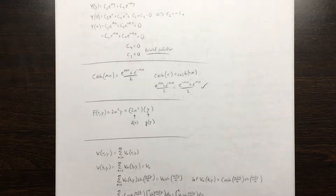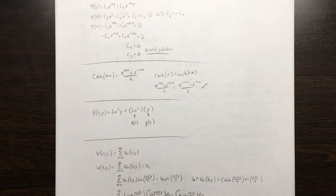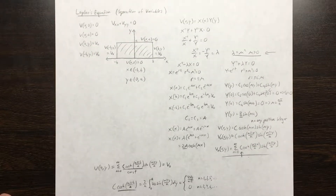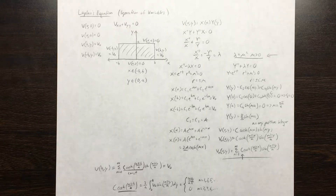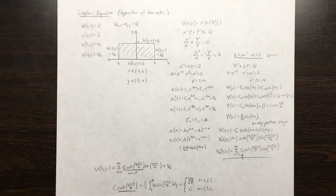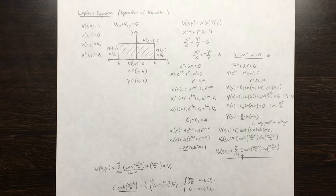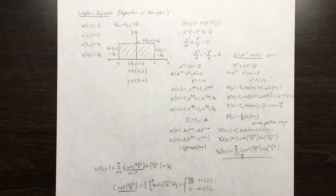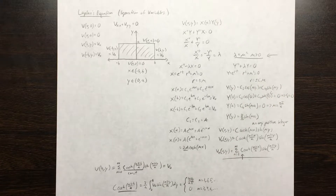Not every function can be separated into this form, so why are we justified in assuming a solution of that form? The reason is Laplace's equation has a uniqueness theorem that states if you find a solution that satisfies Laplace's equation, then it is in fact the unique solution for the given boundary conditions. So we are justified in making this guess, and if it leads to an answer that satisfies our PDE, that is the unique answer for our problem with these boundary conditions.